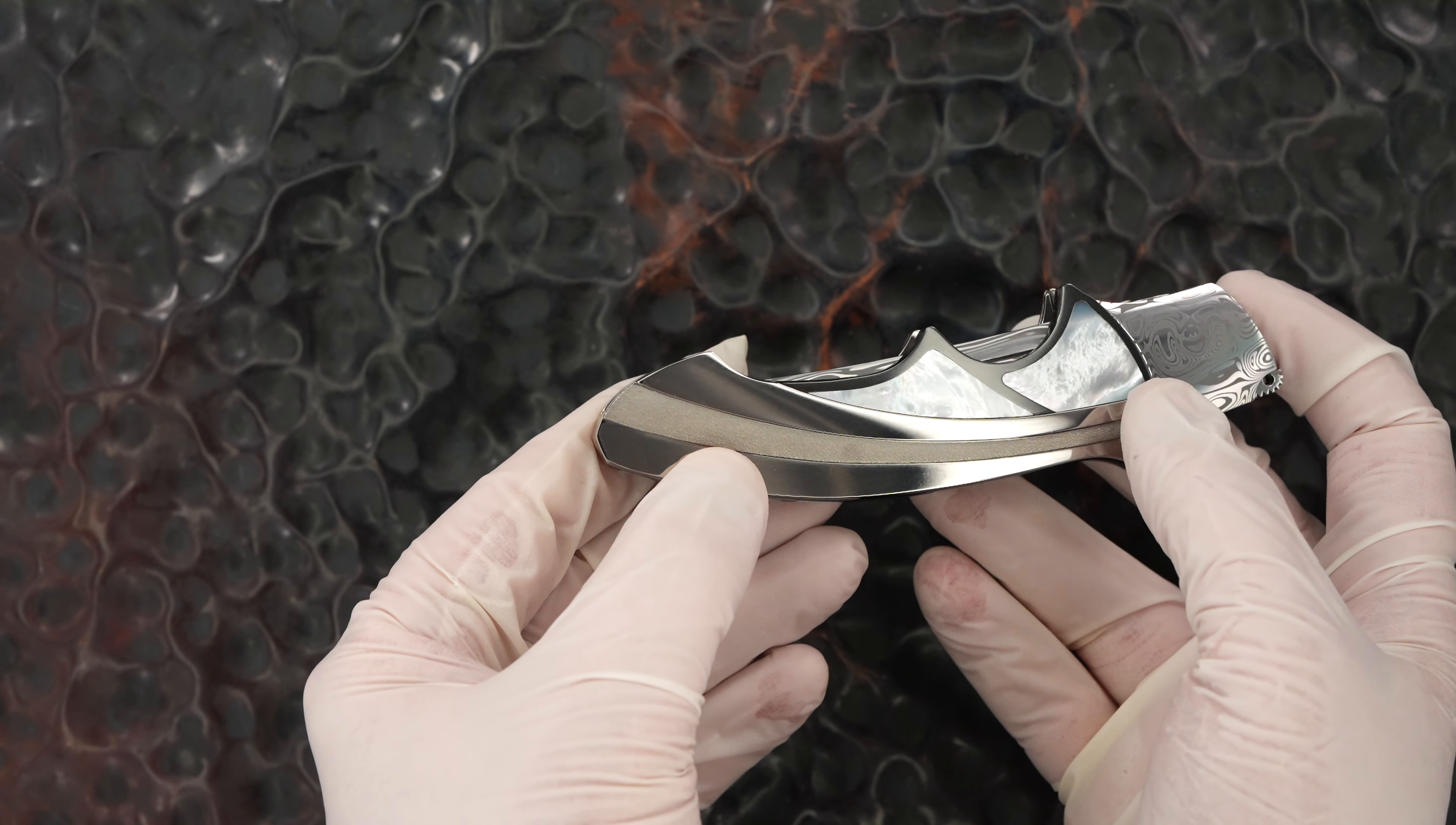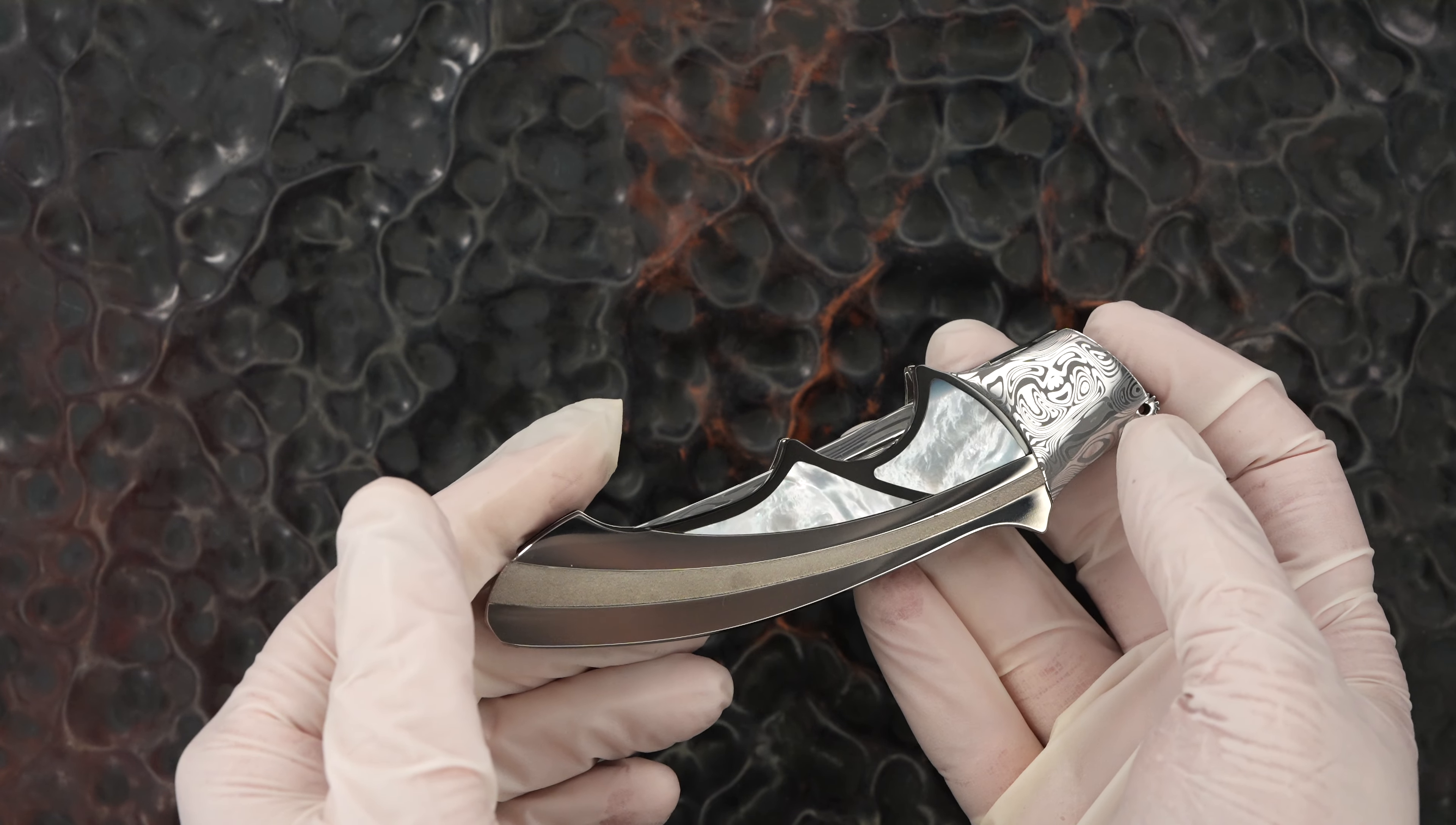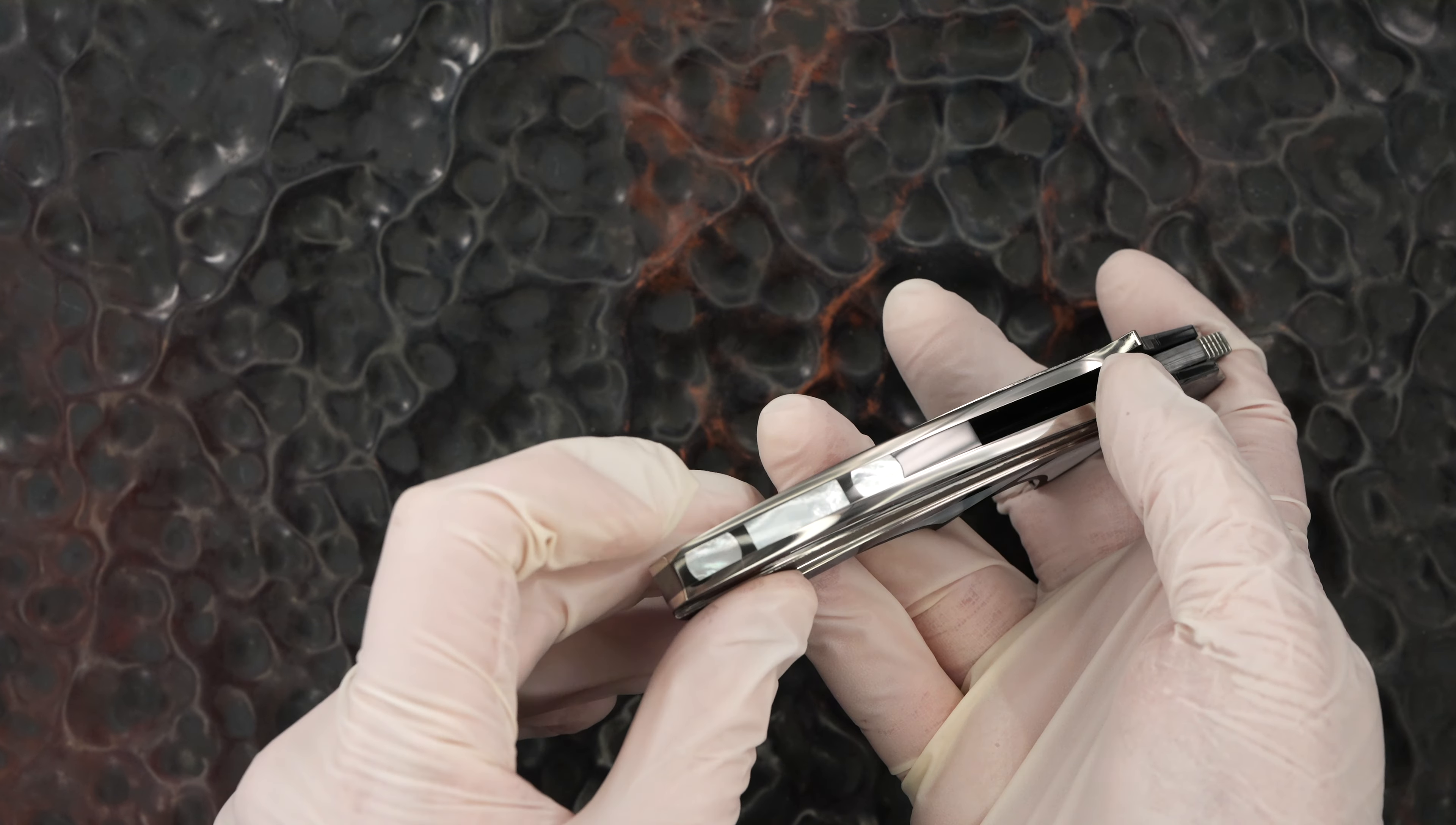I don't know if that's a fine bead blast or what it is, but it's just a contrasting aesthetic to show off his talents in the knife. The bolsters are damasteel. The back bar is zirconium and mother of pearl.